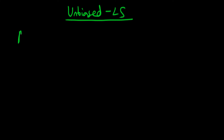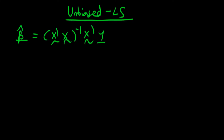In matrix form, the least squares estimator beta hat is equal to (X'X)⁻¹ times X'y, where y is our dependent variable. We suppose that in the population there is some process which determines our vector of y, and that's equal to our matrix of independent variables times the true population beta plus some population error u.